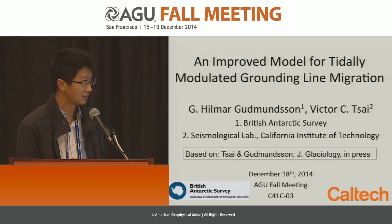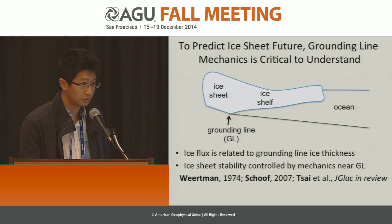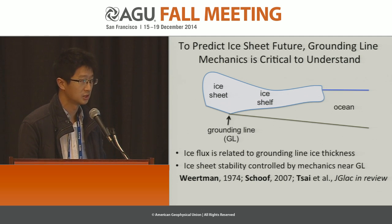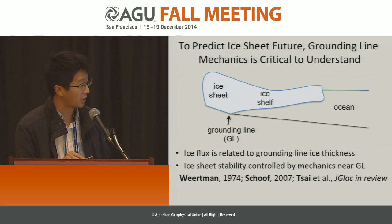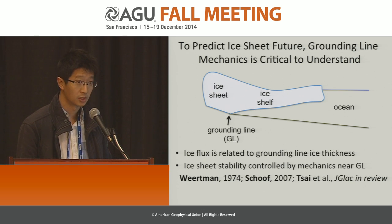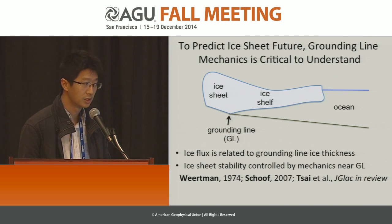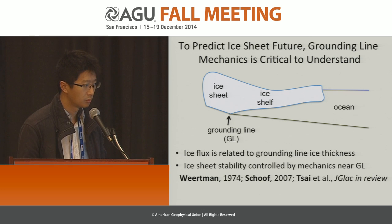You can hopefully within a couple of weeks download this paper. I don't really need to motivate why I'm looking at grounding line migration over a tidal cycle, but just for a brief motivation: in order to understand the future of ice sheets, in particular marine based ice sheets, we really need to understand the mechanics near the grounding line. There's some theoretical work going back to Wertmann and also to the paper Christian Schoof published in 2007, suggesting that the ice flux is intimately related to the grounding line ice thickness.